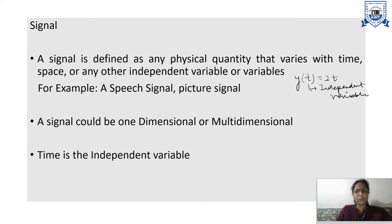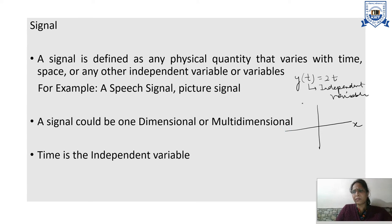Examples of signals include a speech signal, a picture signal, or stock market analysis — all can be considered as signals. When you have to represent a signal graphically, you need to understand where the independent variable will come and where the dependent variable will come. On the x-axis we define the independent variable — here t — and y, which is a function of t, will come on the y-axis.